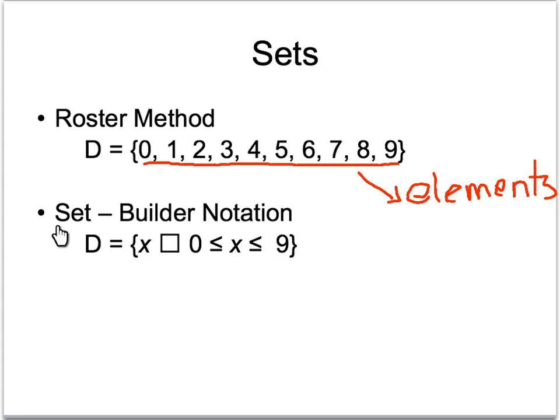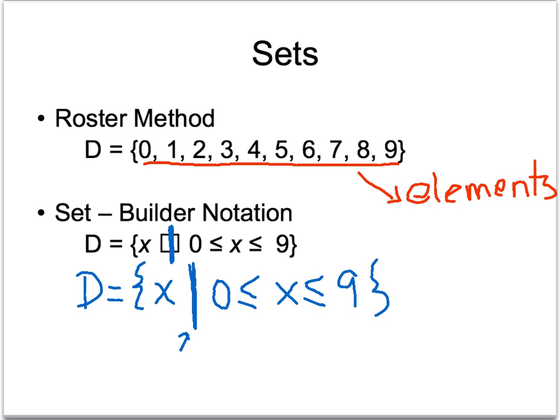With set builder notation, however, you can list an interval of things. And so here's how we read set builder notation. This is supposed to be a line that did not transfer to my program, so let me rewrite this. D equals X such that, that's what this line stands for, it's all the numbers that are in between 0 and 9. So, set D is equal to any X such that X is in between 0 and 9. This particular set would include numbers that are decimals, and so on and so forth, not just whole numbers like we see up here.